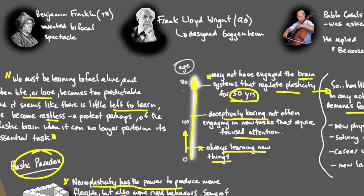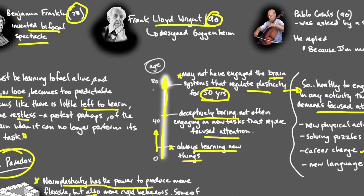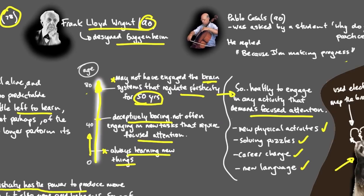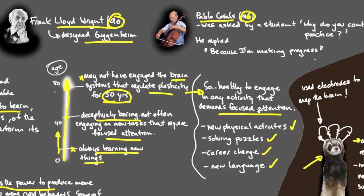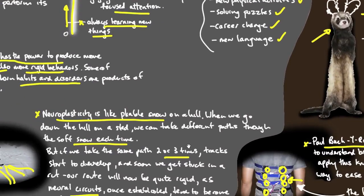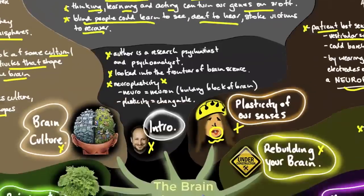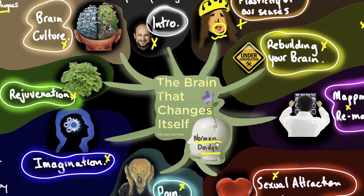To finish up here, three examples that I adored. Benjamin Franklin at 78 invented the bifocal spectacle. Frank Lloyd Wright at 90 designed the Guggenheim Museum. And the famous cellist Pablo Casals at 96, when asked by a student why do you continue to practice, he replied, because I'm making progress. I hope I'm still making progress. I do hope you're still making progress. Otherwise, we get restless.